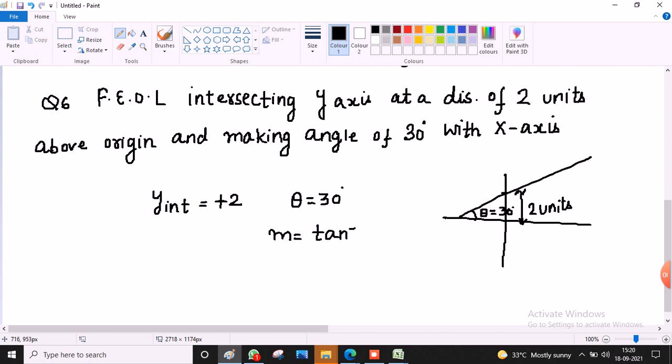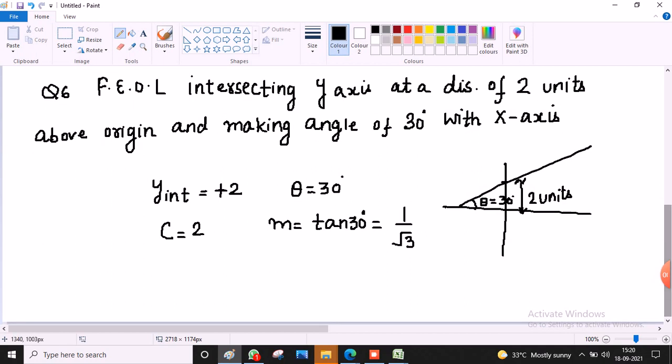tan 30, tan 30 value 1 by root 3. Then we get slope and intercept, and I have, I mean, c value 2. The equation of line directly we can write, y equal to mx plus c.